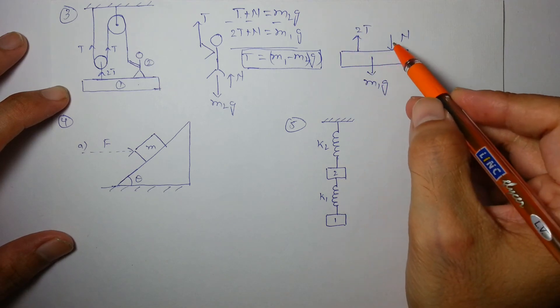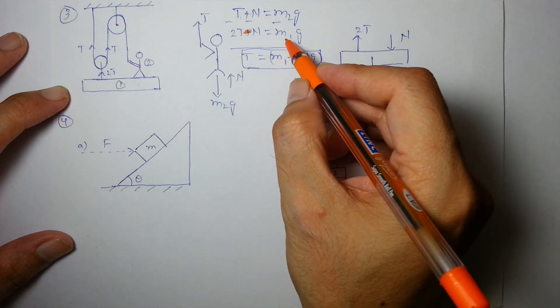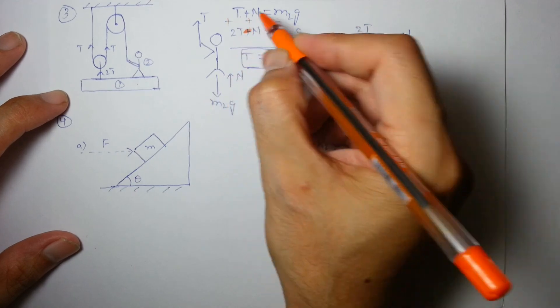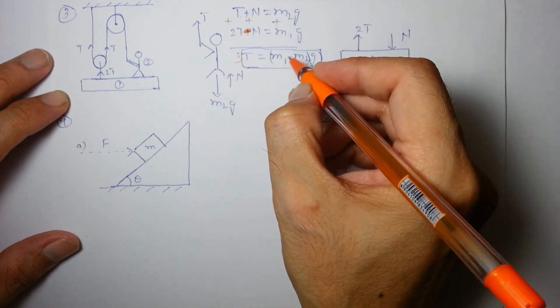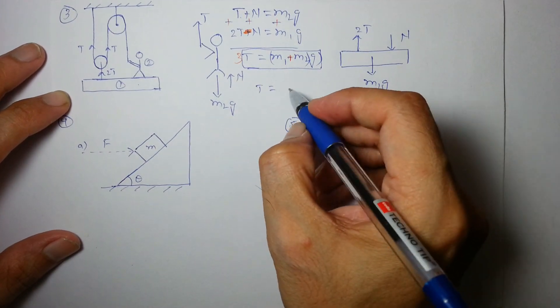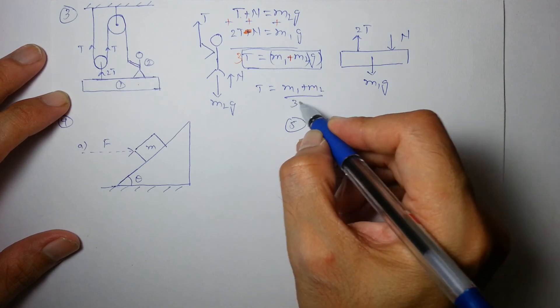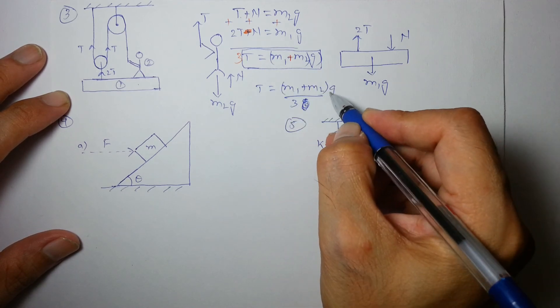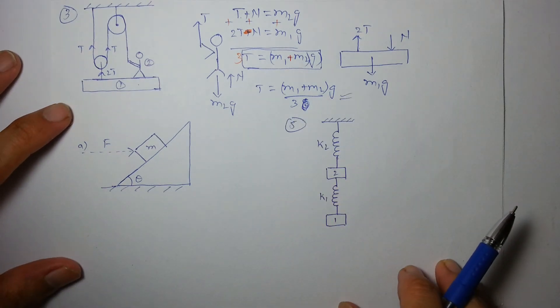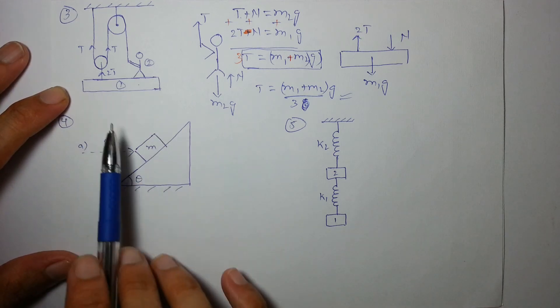In this equation, this should be 2t minus n. As n is downward is equal to m1g. So, we should not cancel, we should add them. So, 3t is equal to m1 plus m2g and t is m1 plus m2 by 3g by 3 into g. So, this is the force applied by man on the string or force applied by man to hold the whole system at equilibrium.